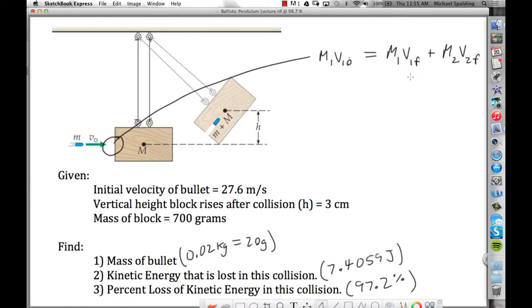Now a lot of you I heard talking about this problem. These velocities here, what do we notice about these two velocities? They are the same. Why are those velocities the same? Because the bullet and the block become one, right? The bullet goes into the block and gets stuck in the block, so we can rewrite this whole equation.